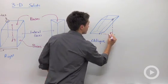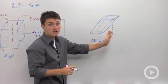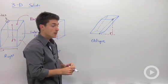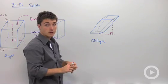So the altitude that I dropped from here will be outside of that prism. So that's one way that you can determine if a prism is oblique.